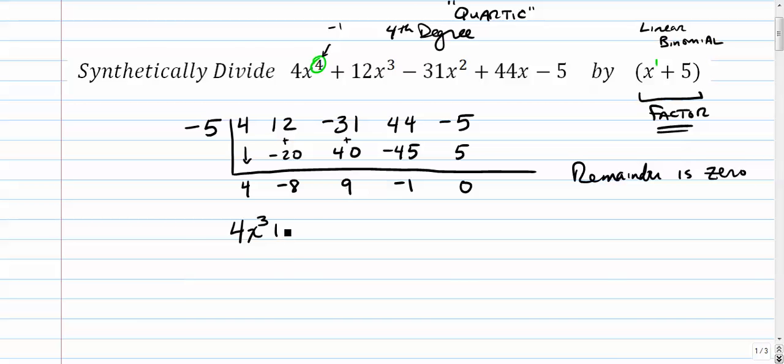So you take that 4 and you subtract it by 1. You reduce all of your exponents. So it's 4x to the third.